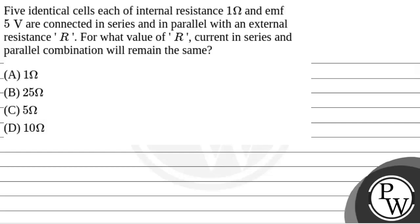Hello, let's read the question. The question says that five identical cells, each of internal resistance 1 Ohm and EMF 5V, are connected in series and in parallel with an external resistance R. For what value of R will the current in the series and parallel combination remain the same?